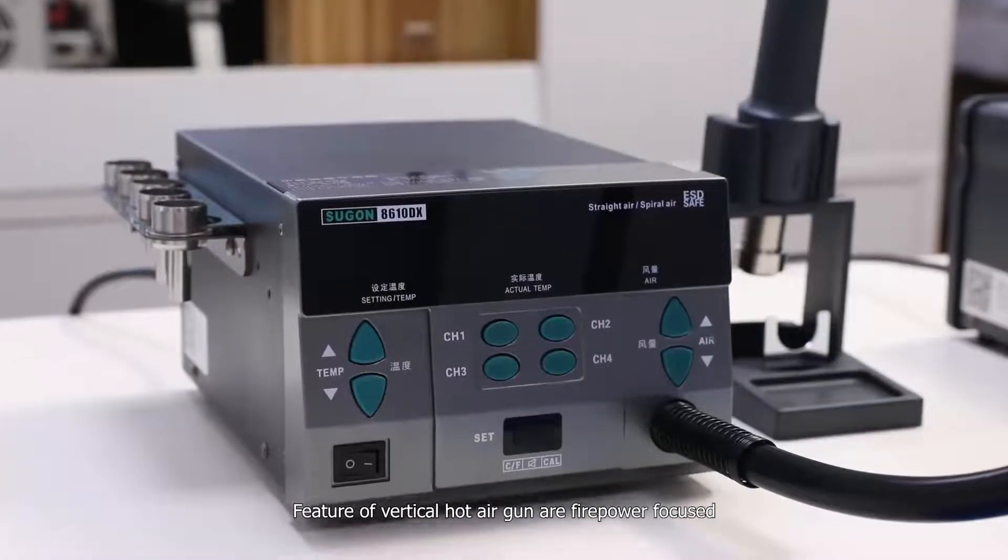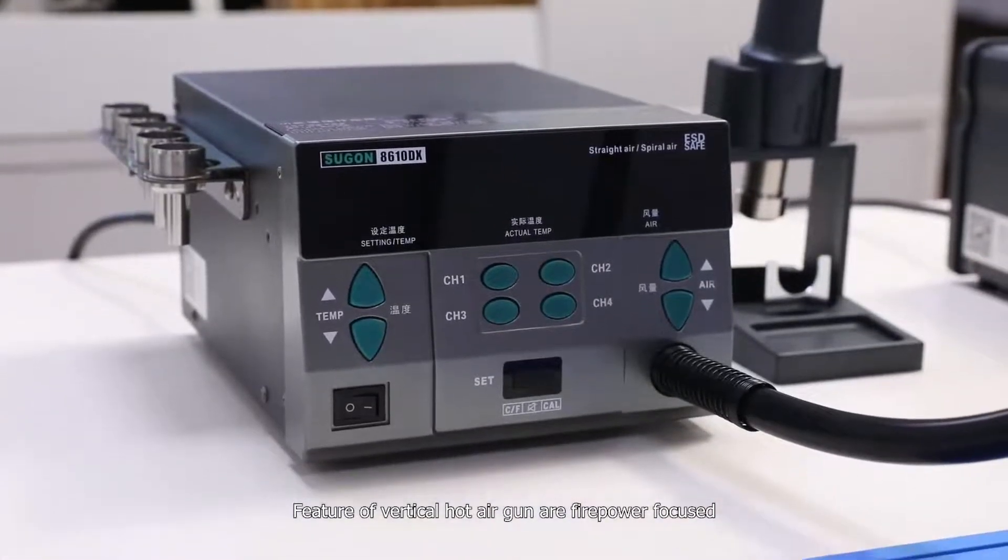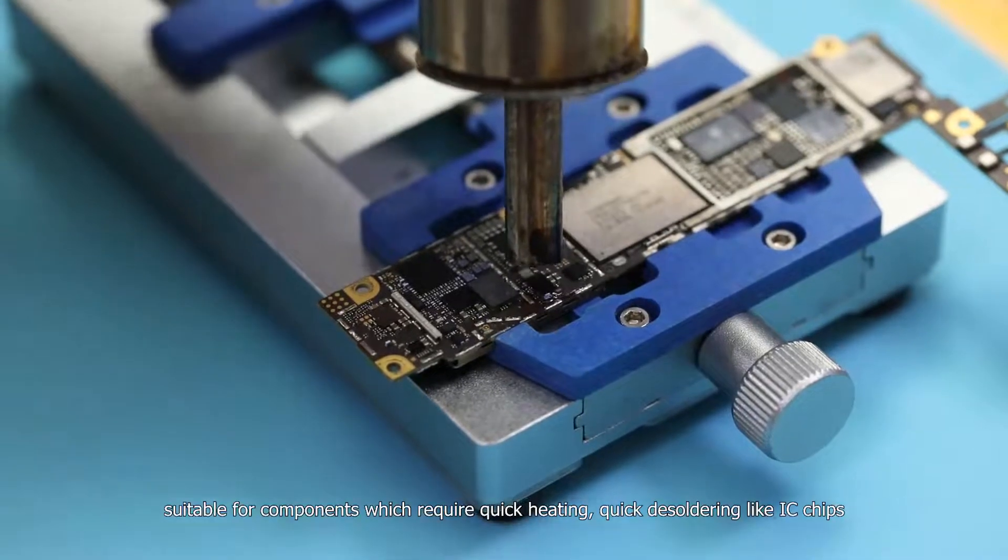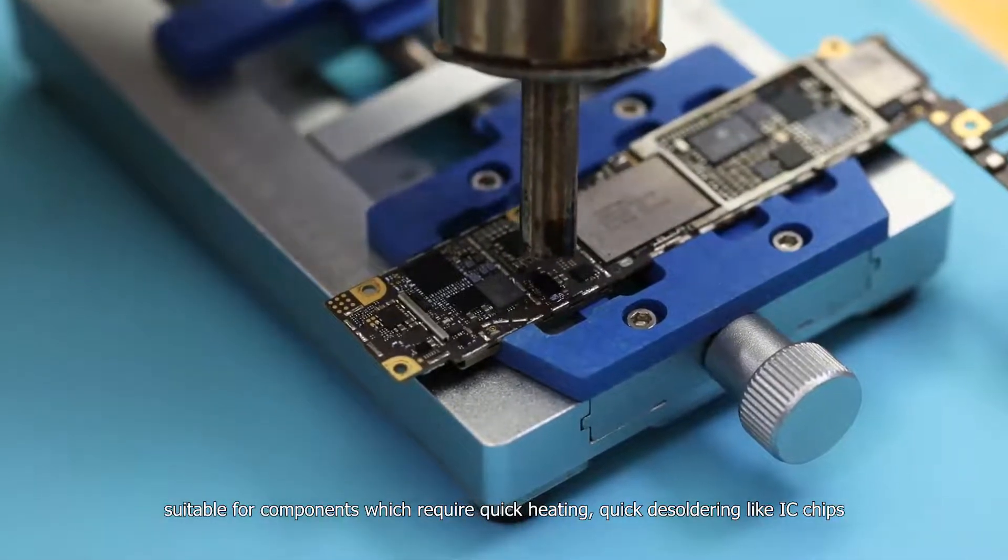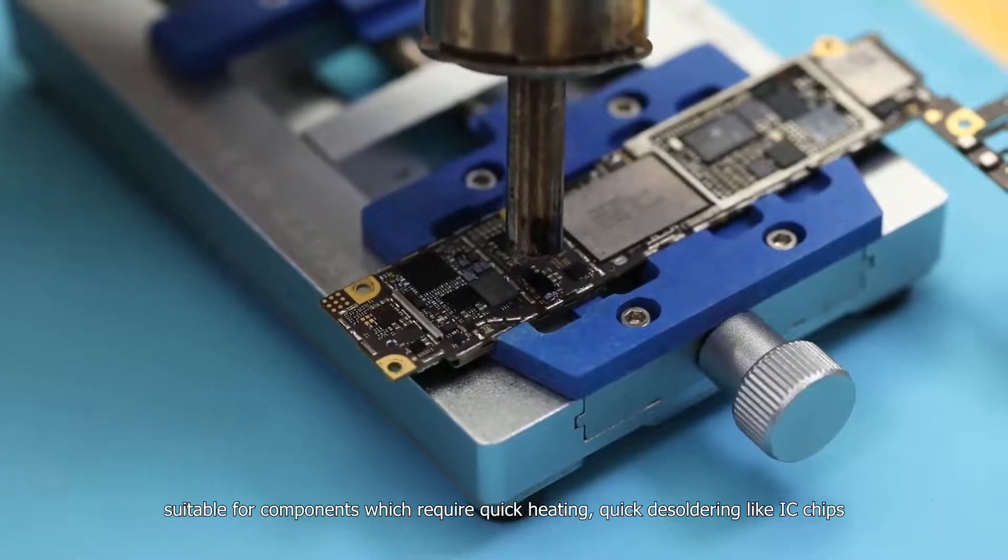Features of vertical hot air gun are firepower focused, strong penetrating, suitable for components which require quick heating, quick desoldering like IC chips.